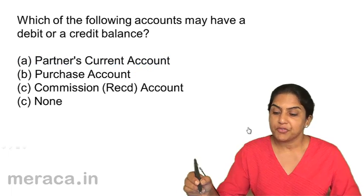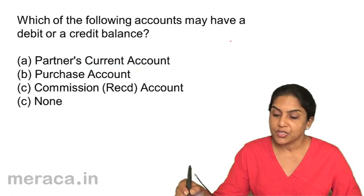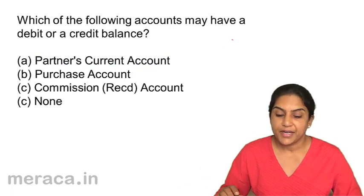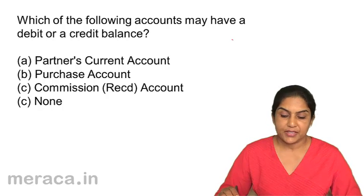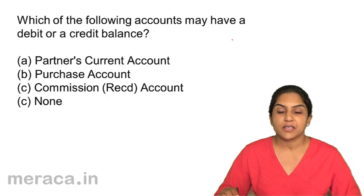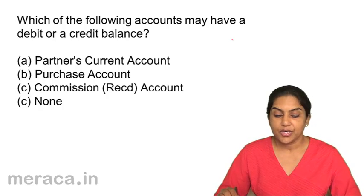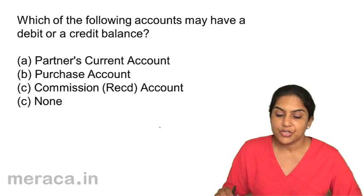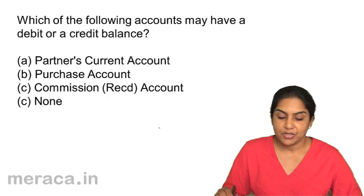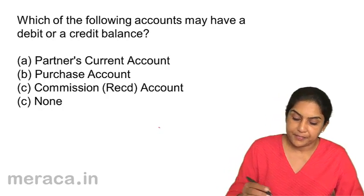Next: which of the following accounts may have a debit or a credit balance? A. Partner's current account. B. Purchase account. C. Commission received account. D. None.